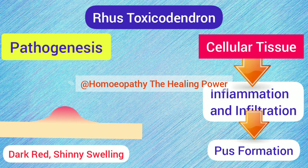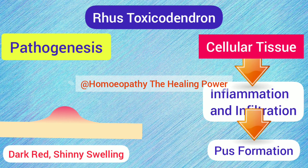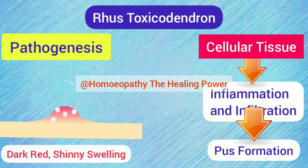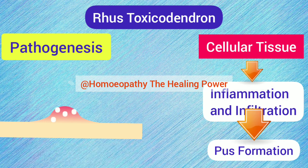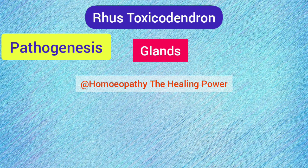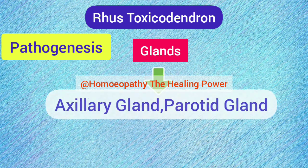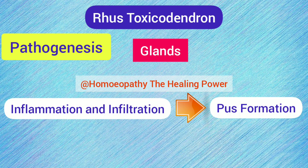There is a typical swelling in Rhus Tox which differentiates it from other medicines like Belladonna and Apis. The affected part, which is shiny red, also has skin complaints over the swelling — described as numerous small, painful, white vesicles over the inflammatory area. Rhus Tox also has action on glands, particularly the axillary gland and parotid gland, where it produces inflammation, induration, and later pus formation.